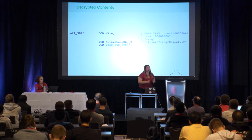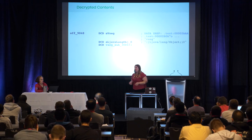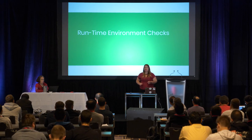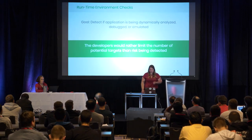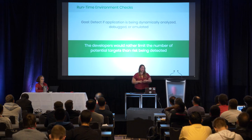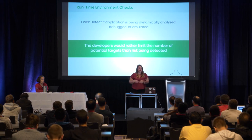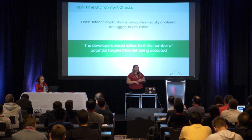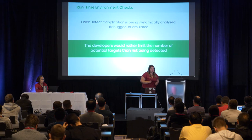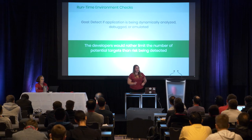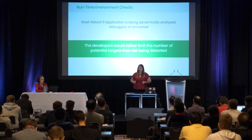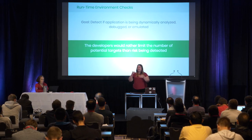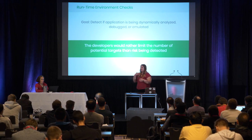Now we get back to our original goal of reverse engineering and understanding what the native methods were doing in the Java application. This leads us into all of the runtime environment checks. From the malware authors' point of view, the goal of all of these runtime environment checks is to detect if the application is being dynamically analyzed, debugged, or emulated — and they don't want to run in those cases. Based on the checks they chose, they're also willing to limit the potential targets of where their malware runs in order to prevent detection, getting into the asymmetric investment between malware analysts and malware developers.